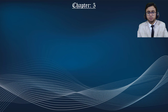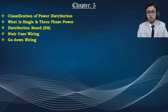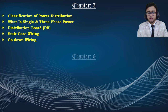In chapter 5, we discuss the classification of power distribution, including single-phase and three-phase power and the types of distribution boards — sub-main distribution boards and main distribution boards. We also cover staircase wiring, one-way switches, two-way switches, three-way switches, and godown wiring, where by using double-throw and single-throw switches we connect lights — the type of connections typically found in godowns or corridors.